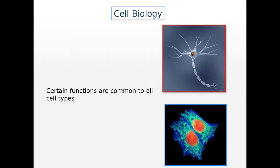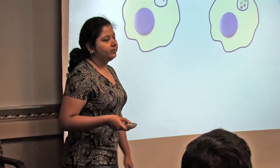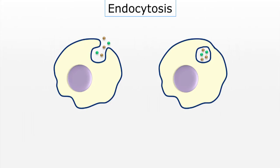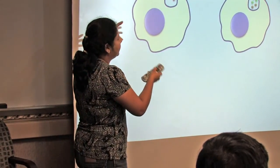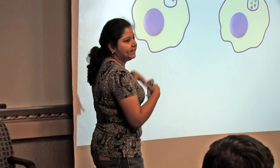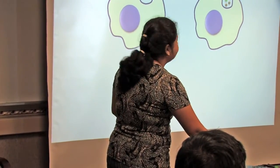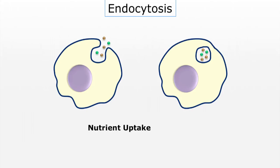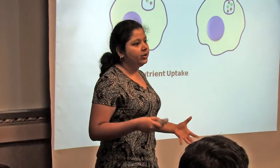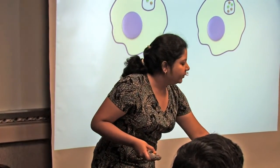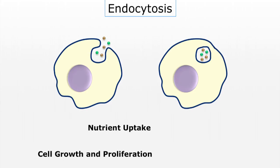There are certain functions that are common to all cell types, and one of these functions is what we are interested in, which is endocytosis. What is endocytosis? It is basically internalization. A very good analogy to endocytosis is eating — cells uptake nutrients and engulf them within itself. Since it is good for eating, endocytosis is important for nutrient uptake. Cells also uptake several growth factors that signal the cells whether to grow, to divide, and so on. Therefore, endocytosis is good for cell growth and proliferation.